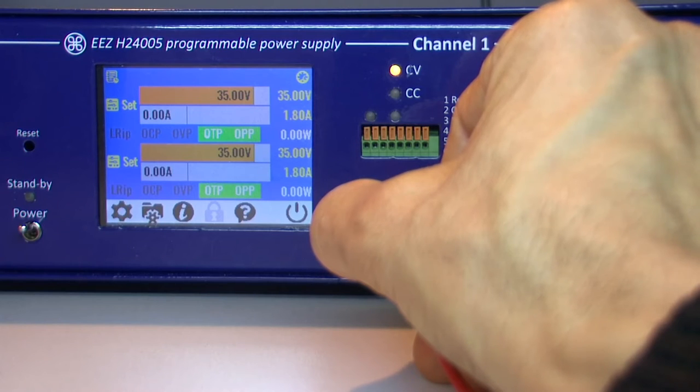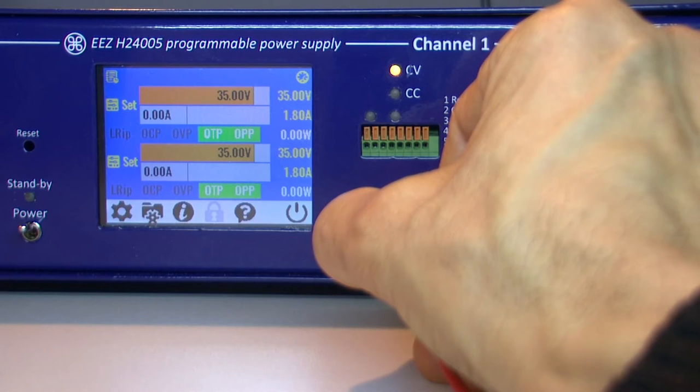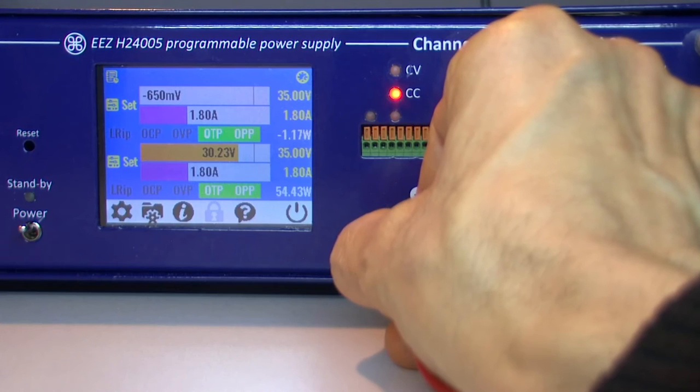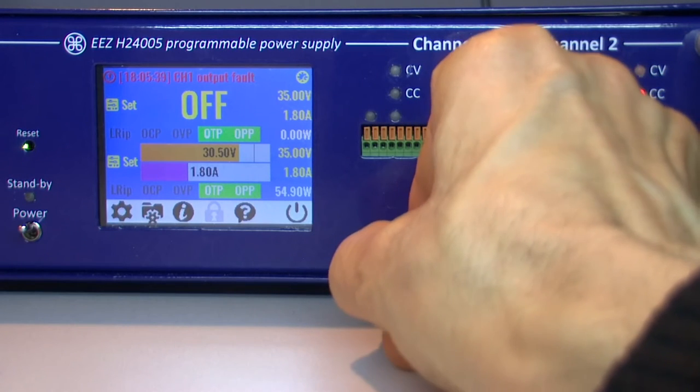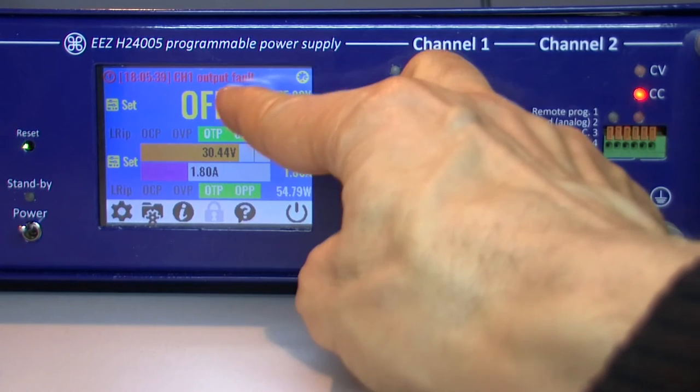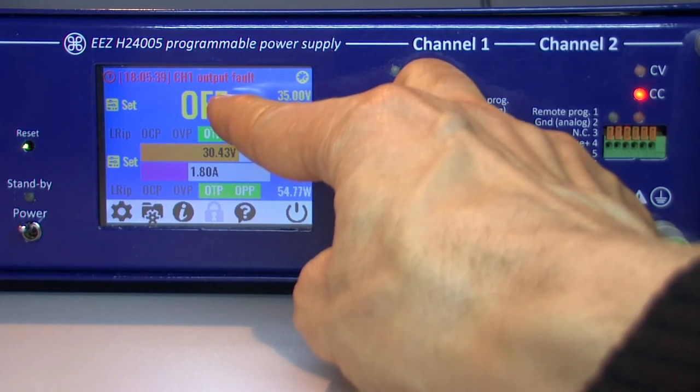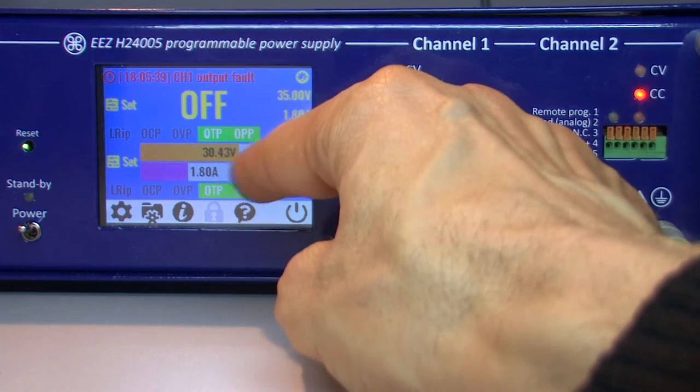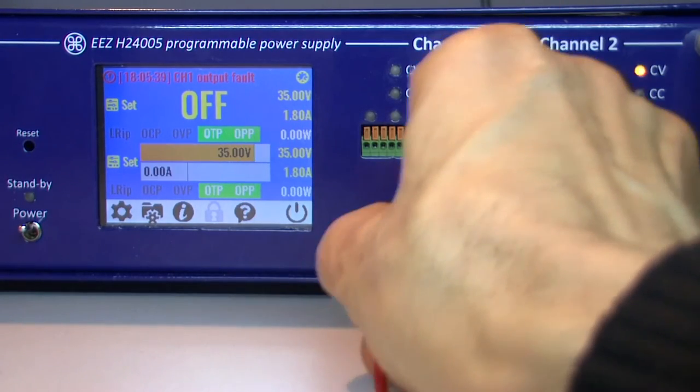But even without down programmer it's possible that channels continue to sink instead of source current. And if that happens, firmware will react once again and completely switch off that channel. Now we'll see what will happen in our case with 70 volts on the output, current which is limited to 1.8 amps, with load that's a little bit more than 16 ohms. Okay, first five seconds and even without that down programmer something is wrong, and firmware completely switched off that channel. So complete power is now sourced from the second channel. But it's not so good.